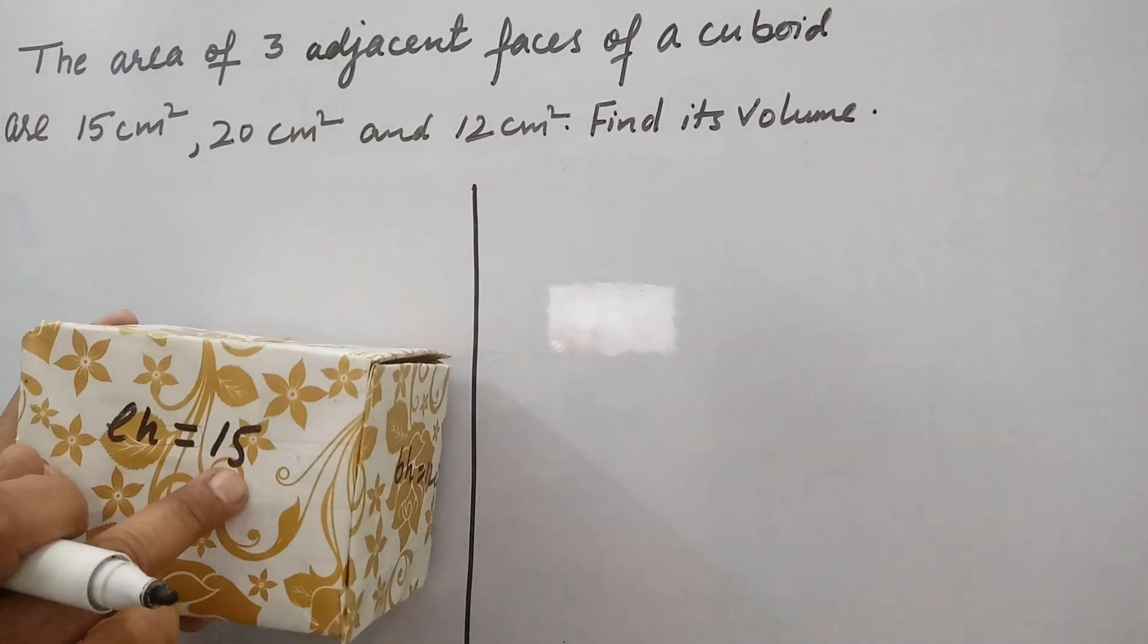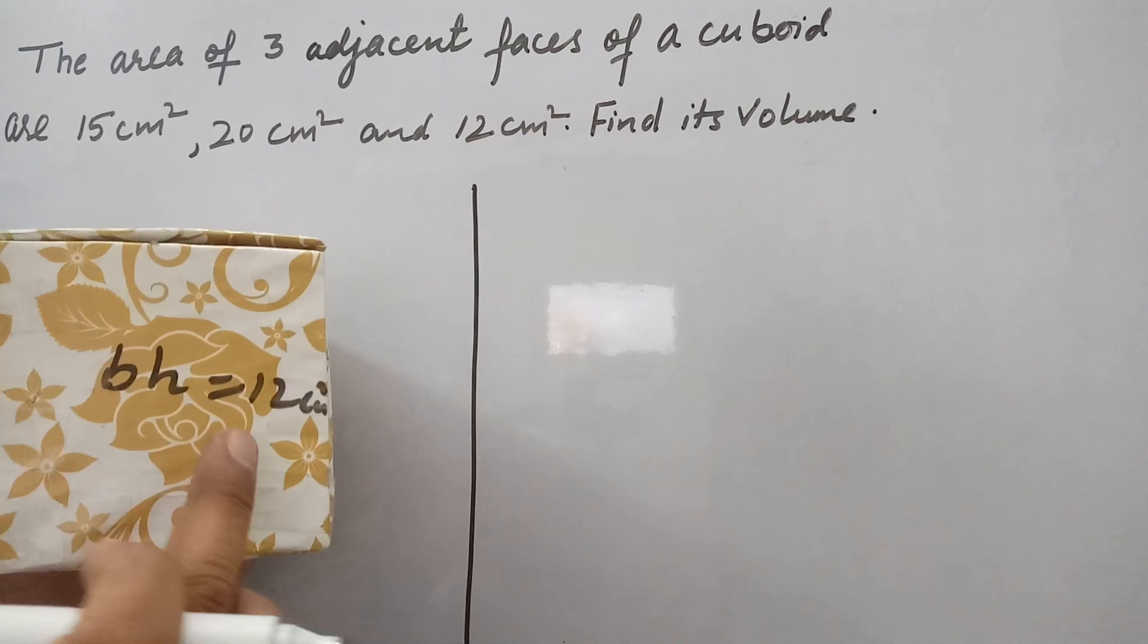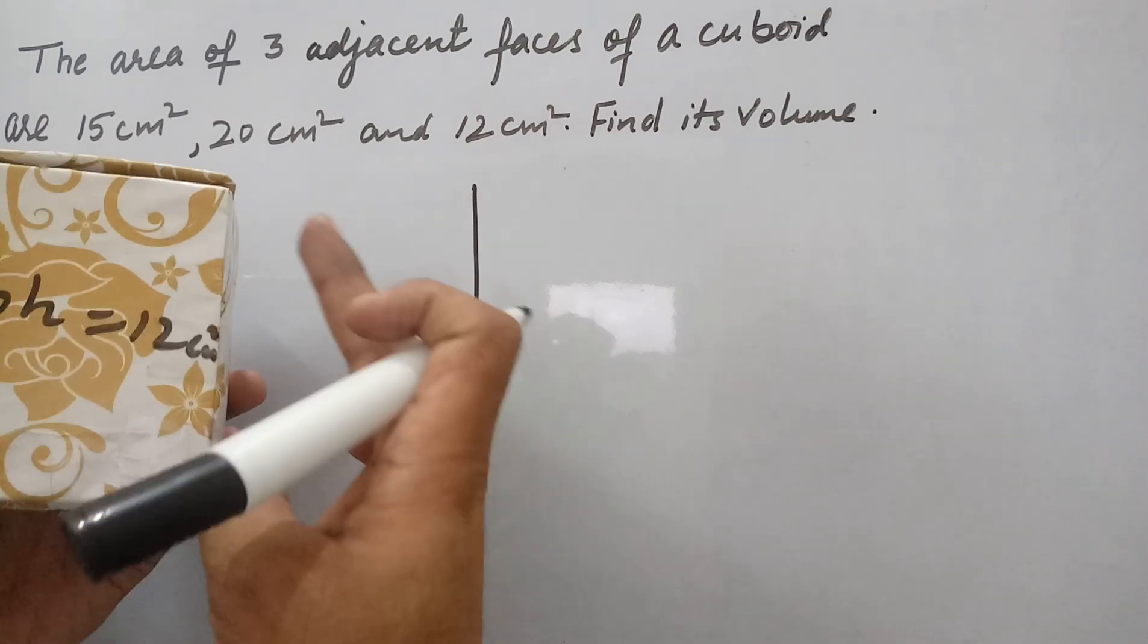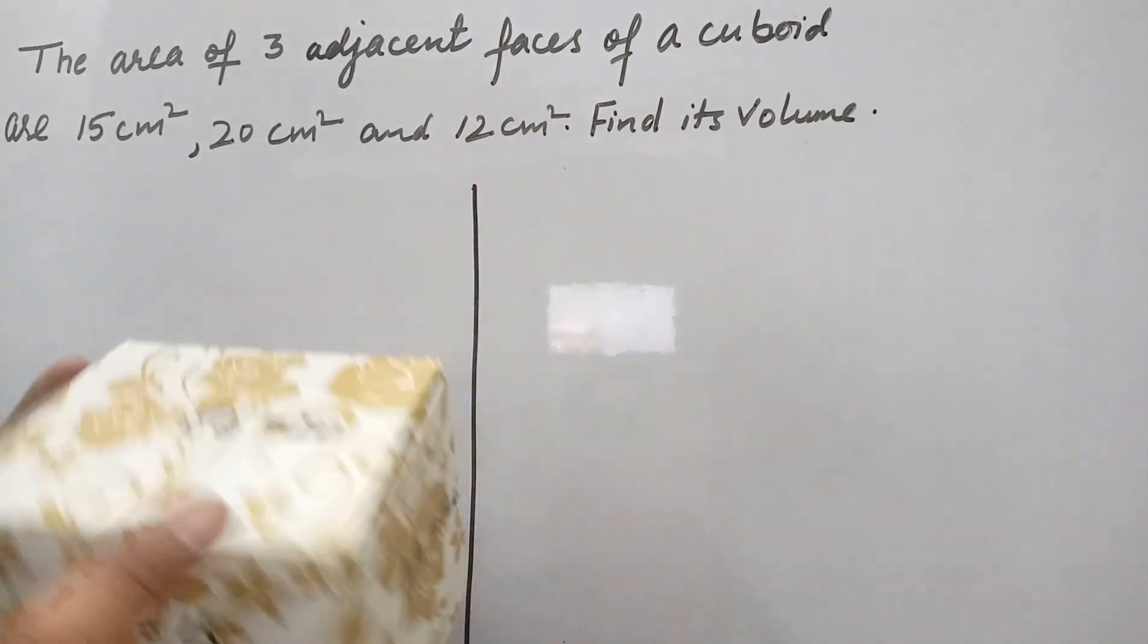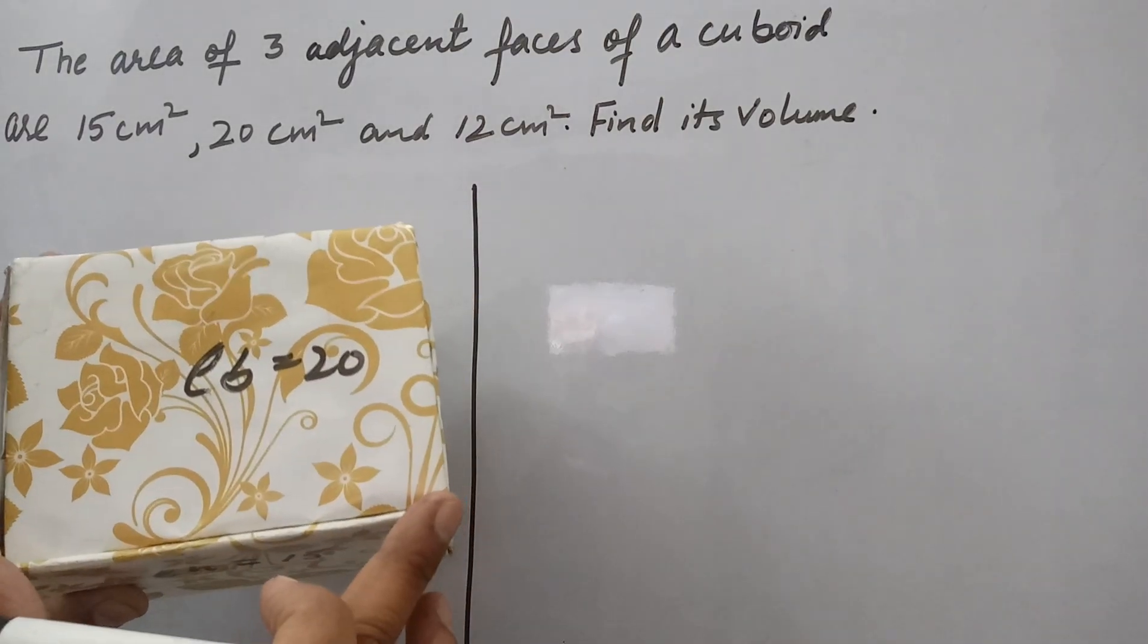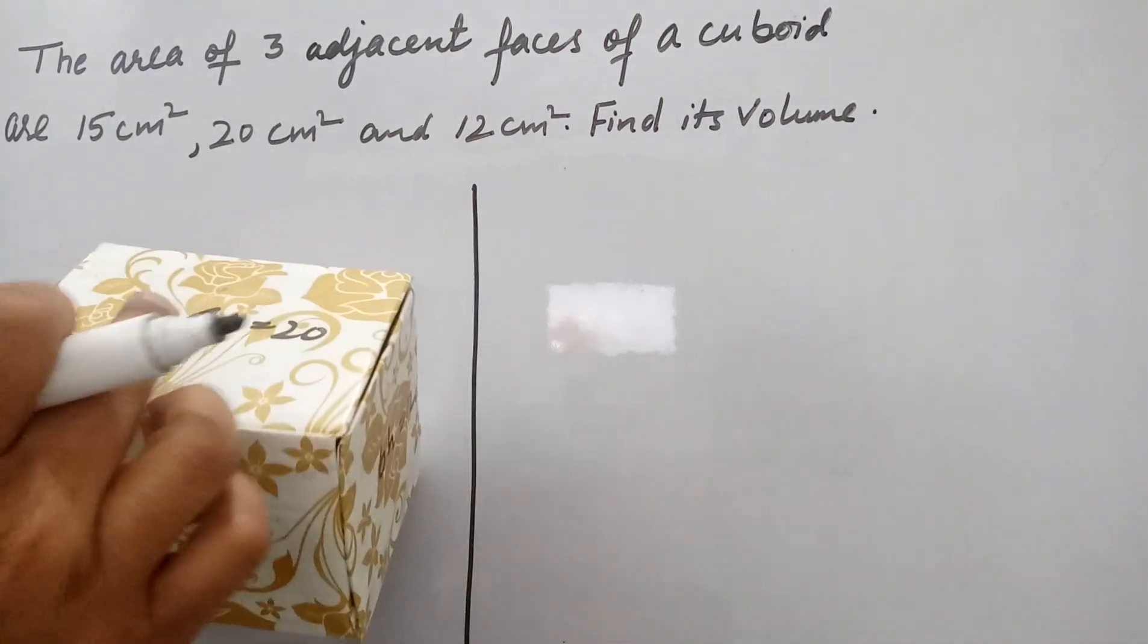Suppose this is 15 cm², and this surface area is breadth and height, so BH. So it is 12 cm², and this surface area is length and breadth, so it is LB.